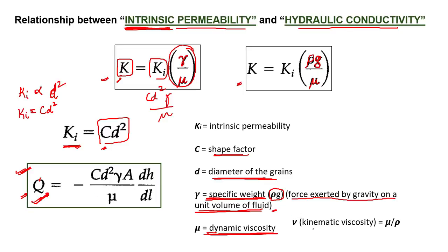There is one more term which is kinematic viscosity, denoted as nu. It equals dynamic viscosity mu divided by the density of the fluid rho.